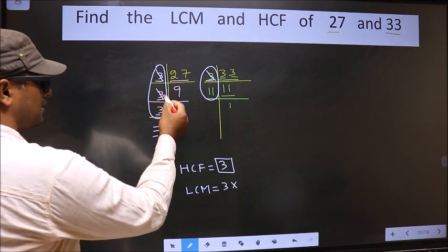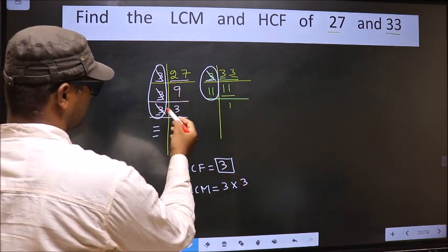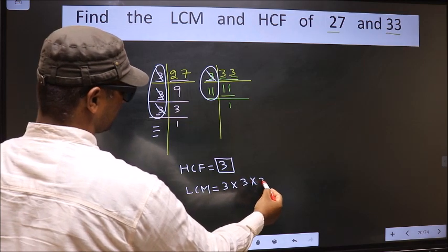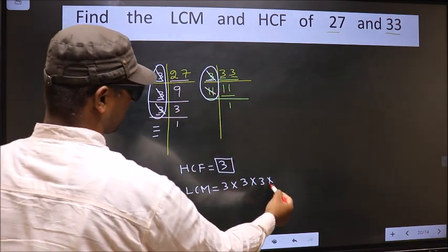Here we did not cut 3, so you cut 3 and write here. This 3 not cut, so you cut 3 and write here. Here 11 not cut, so you cut 11 and write here.